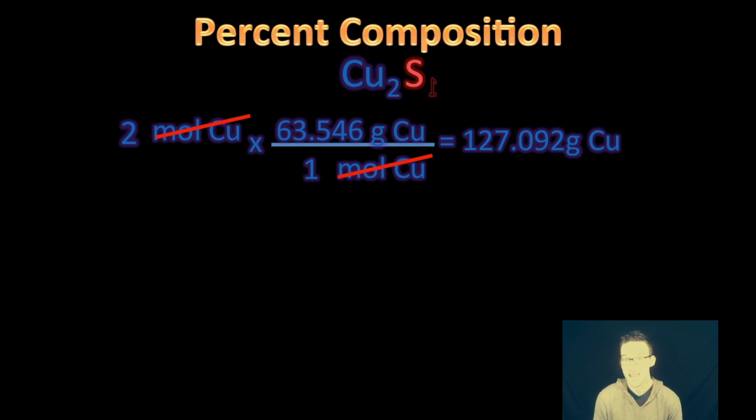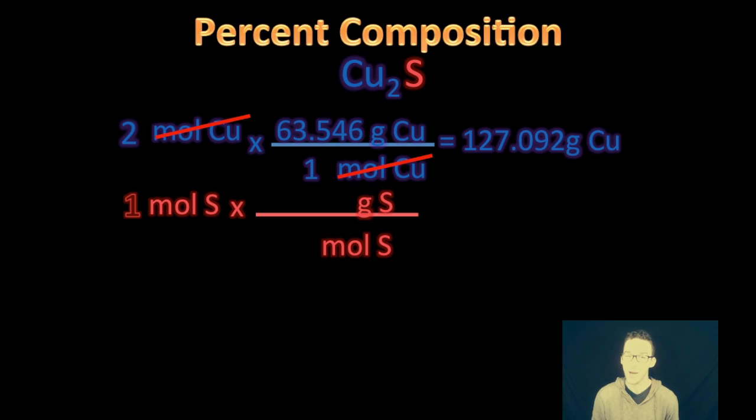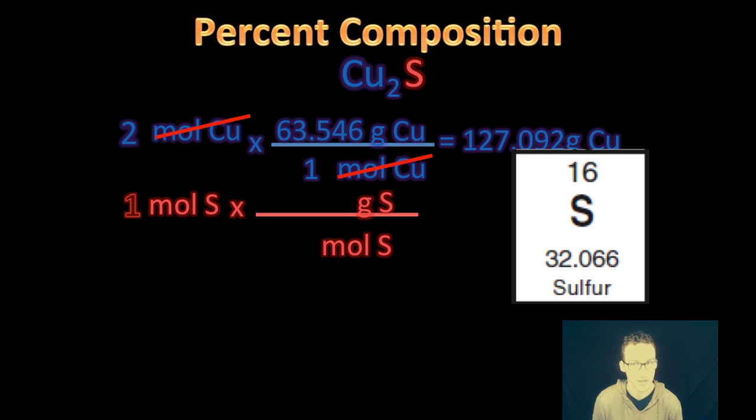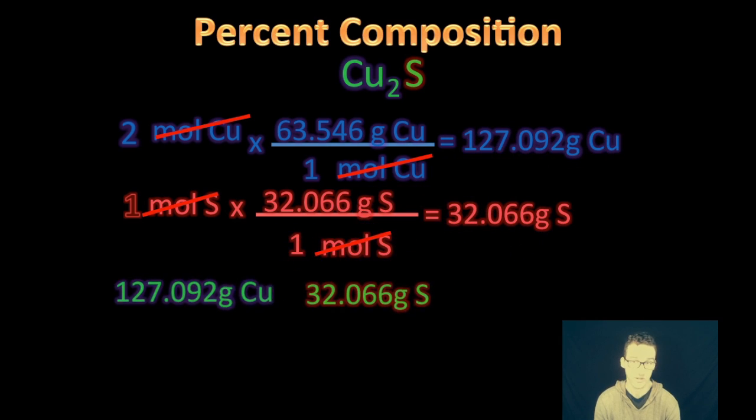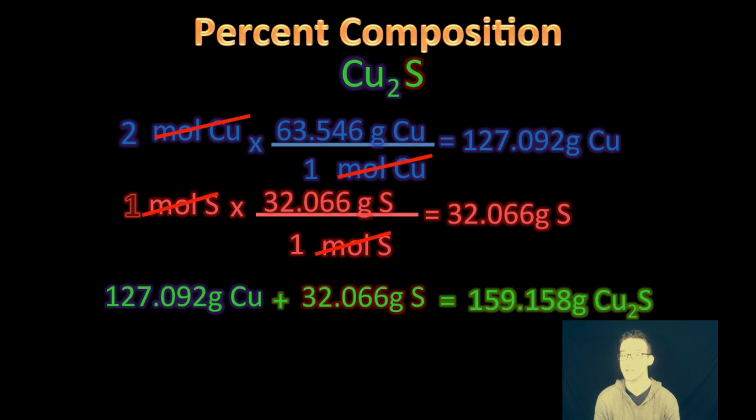We can do that same thing with sulfur. Keep in mind, though, we've only got one mole of sulfur in this compound. And that one mole of sulfur, no, not 63.546 grams. It is 32.066 grams. Again, periodic table will help you out with this. Therefore, the mass in grams of sulfur in this one mole of copper one sulfide is 32.066 grams.